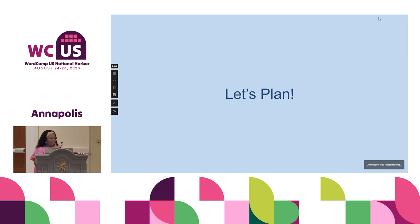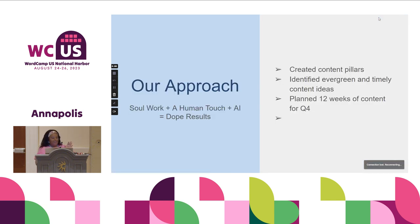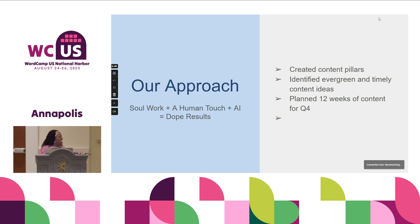Now we're going to start planning, and we started from the ground up. The approach with planning is: you have your soul work, you have your human touch, and then you have AI — and that should give you some pretty dope results. These are the things we did together: we created some content pillars, we identified evergreen and timely content ideas, and then we planned 12 weeks of content for Q4.